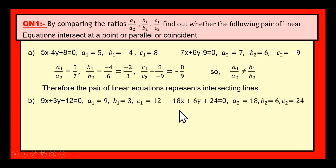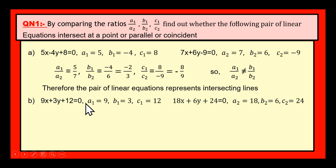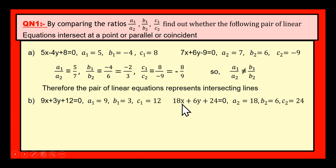In bit (b), we have given again a pair of linear equations. The first equation is 9x plus 3y plus 12 equal to 0, and the second equation is 18x plus 6y plus 24 equal to 0. For the first equation: A1 is the coefficient of x equal to 9, B1 is the coefficient of y equal to 3, and C1 is the constant term equal to 12. For the second: A2 equal to 18, B2 equal to 6, and C2 equal to 24.